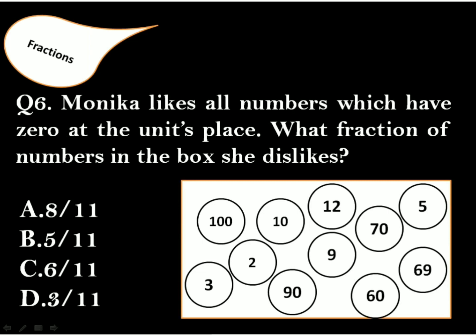Question 6: Monica likes all numbers which have 0 at the unit's place. What fraction of numbers in the box she dislikes? Option C is the correct answer. There are total 11 numbers, out of which 5 numbers have 0 at the unit's place.